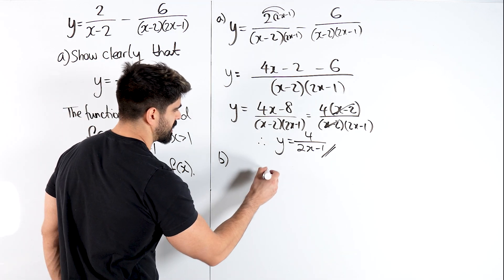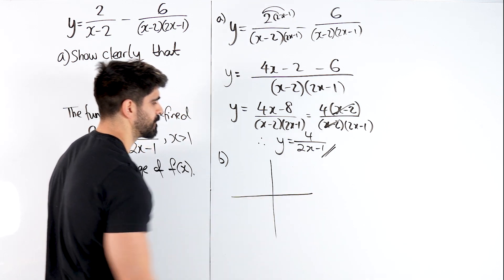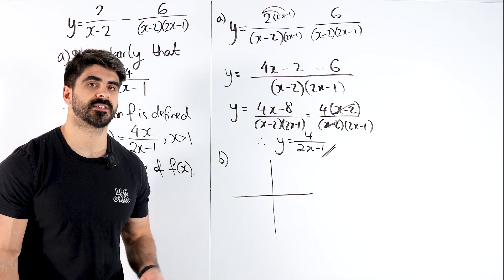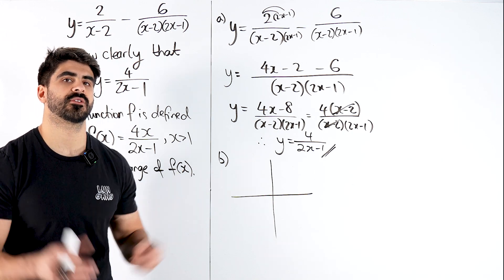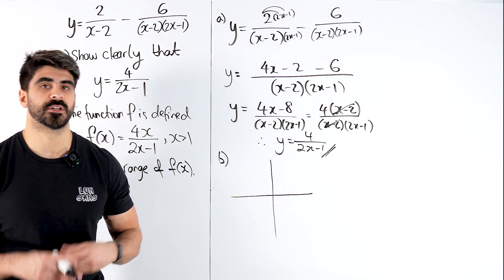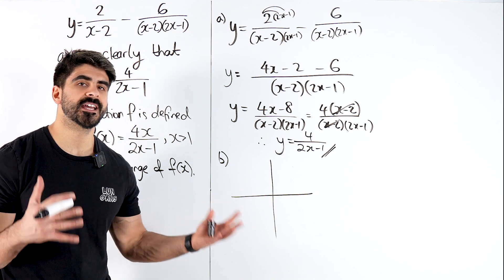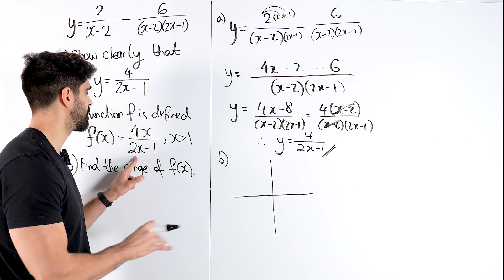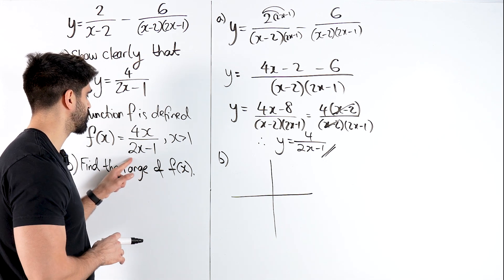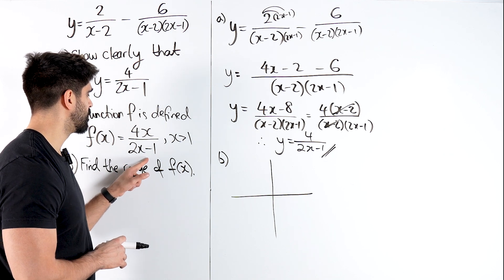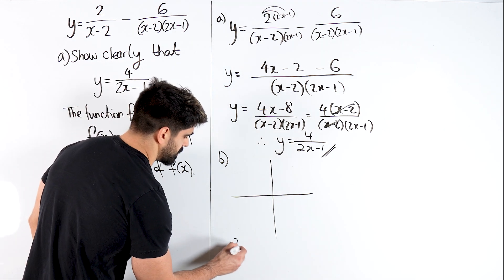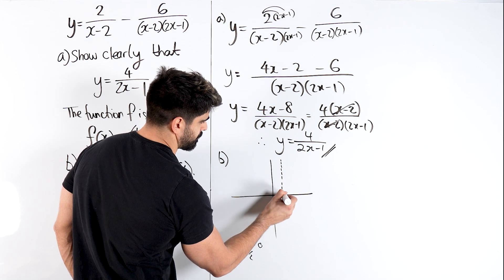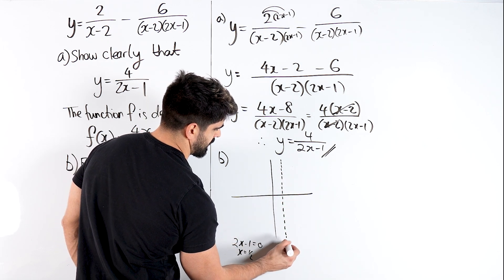How do we sketch reciprocal graphs super quickly? The first thing you do is find the x asymptote. The x asymptote is the x value which you're not allowed to substitute into this function. Because it's a fraction, the only x value you cannot sub in is the one that makes the denominator 0, because we're not allowed to divide by 0. So you're basically saying when does 2x-1 equal 0? Well, that'll be a half. So let's draw a vertical asymptote at x equals 1/2.